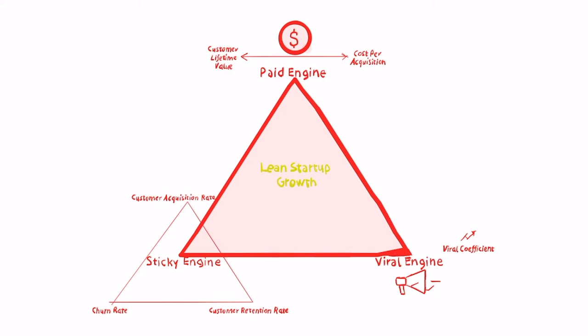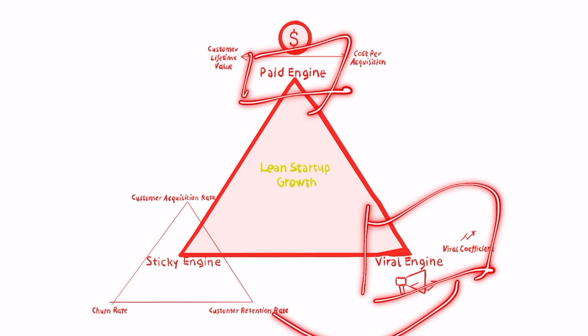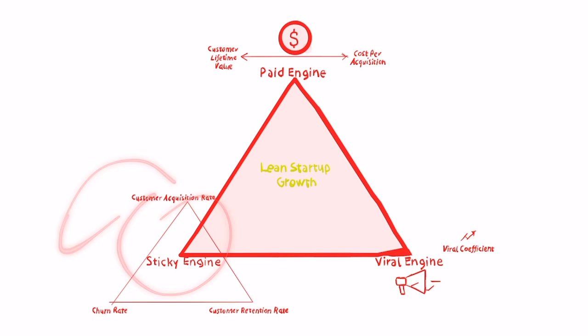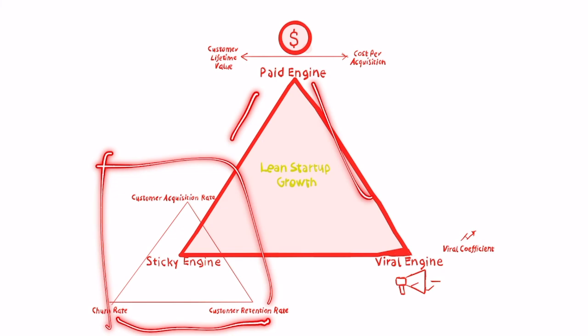Then there is a third element, probably the most important of the three, which is the sticky engine. When you're bringing users to your product, you want to make sure your product is good enough to lower the customer churn rate and increase customer retention. Imagine acquiring paid users or using viral campaigns to bring a lot of users into your product, but they are leaving because the product is not intuitive enough for them to stick around. If you're not creating a sticky experience, you're losing a lot of customers and inefficiently using the other two engines of growth — those two will not work if this one isn't working.